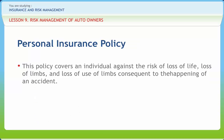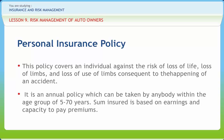The personal insurance policy covers an individual against the risk of loss of life, loss of limbs, and loss of use of limbs consequent to the happening of an accident. It is an annual policy which can be taken by anyone within the age group of 5 to 70 years. The sum insured is based on earnings and capacity to pay premiums. There are three types of benefits available. First, on death, the total sum insured is paid as compensation. Permanent total disablement resulting in loss of two limbs, two eyes, or a combination of one limb and one eye also merits payment of the total sum insured.